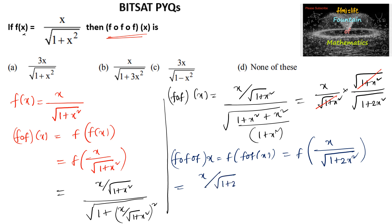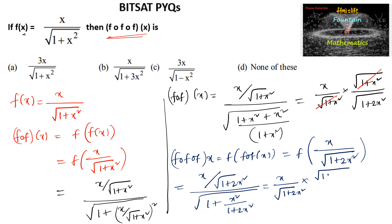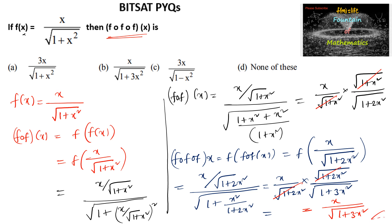We can write x upon root of 1 plus 2x square divided by under root of 1 plus x square divided by 1 plus 2x square, which equals x upon root of 1 plus 2x square into under root of 1 plus 2x square divided by under root of 1 plus 2x square plus x square, that is 1 plus 3x square. We may cancel root of 1 plus 2x square, giving us x upon under root of 1 plus 3x square, which is option B.